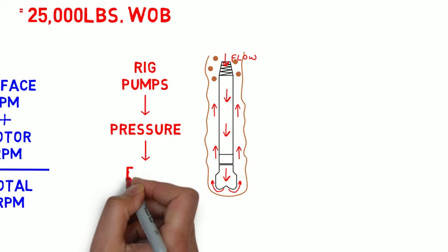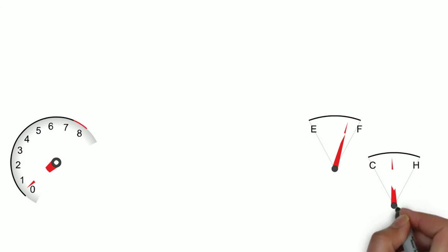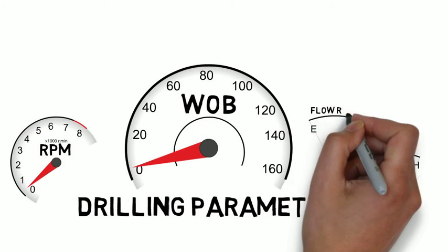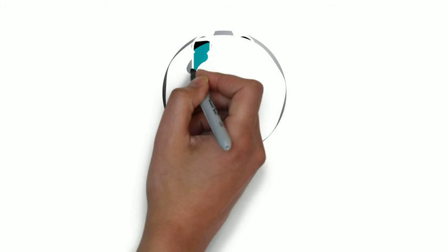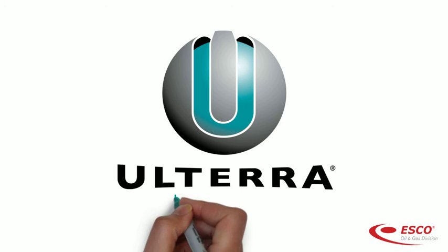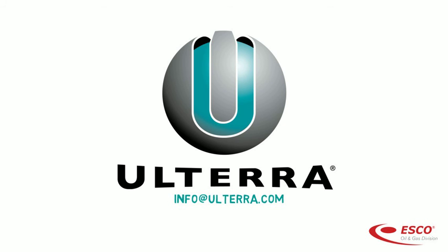These energy sources are often referred to as parameters because they can be controlled to improve drilling performance, which is the topic of the next Drilling Minute. This Drilling Minute was brought to you by Ulterra, an Esco oil and gas company. Please send feedback to info at ulterra.com and thanks for watching.